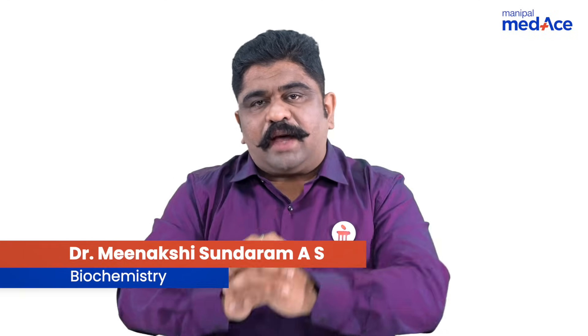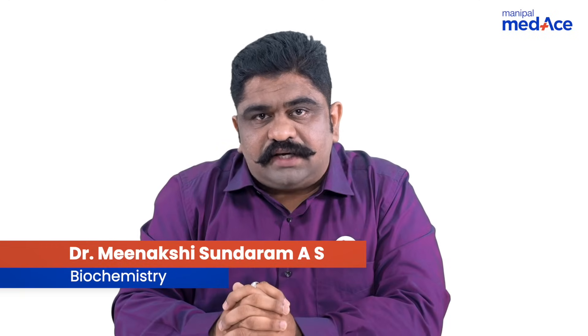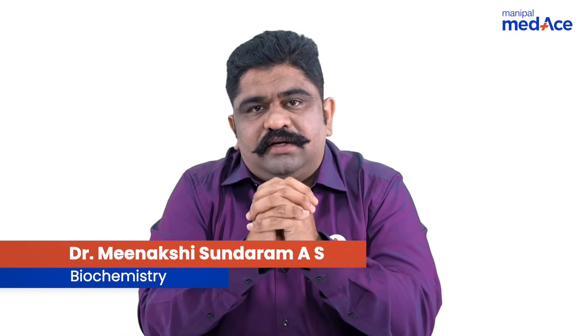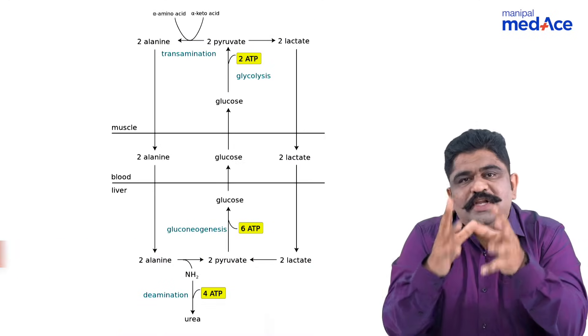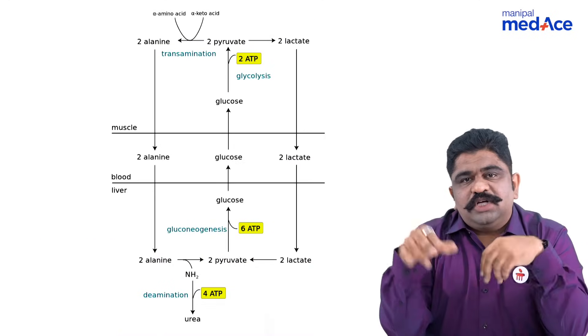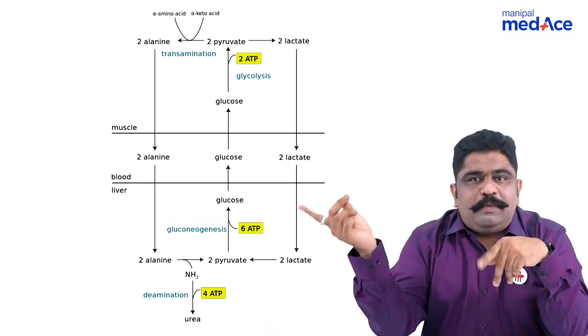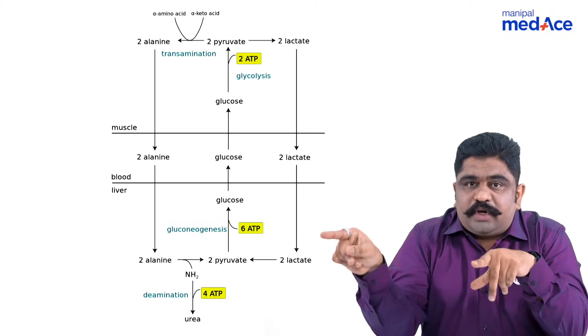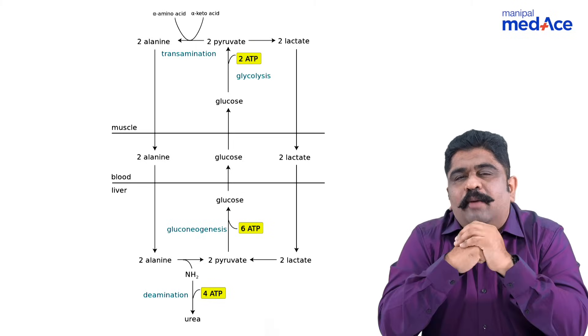Dear students, what happens in the Cahill cycle? When the muscles are contracting, the muscles will utilize glucose, and the glucose will become pyruvate. Now that pyruvate will trap ammonia.